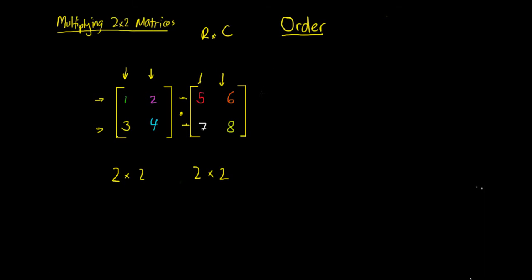This is really important because when we're multiplying these matrices together we need some things to happen first. One condition is that these inner 2 numbers — so at 2 by 2 and 2 by 2, this 2 and this 2 — they need to be the same. If they're not the same, then we can't multiply them. But these are the same in this case, so they're both 2, and we can multiply these matrices together.